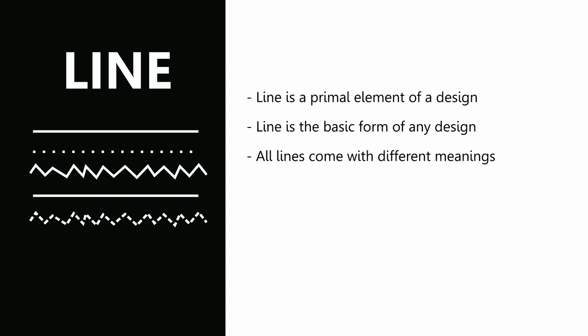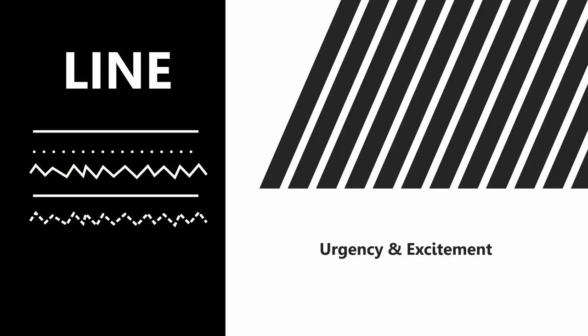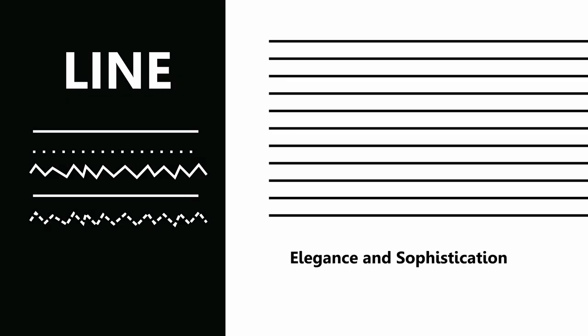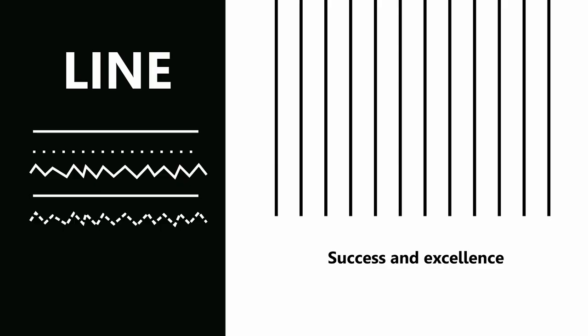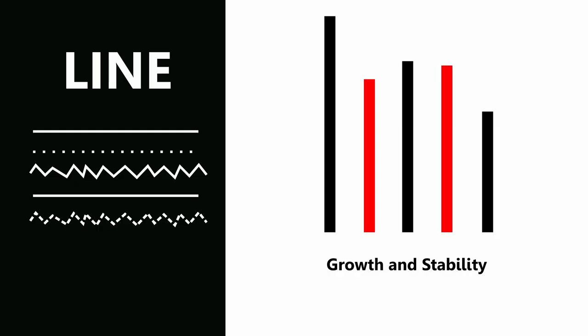All lines come with different meanings. What comes to your mind when viewing a strong diagonal line? It is not a sense of calmness but a sense of urgency and excitement. Diagonal lines can be used to convey motion or strength. Thin horizontal lines convey a sense of elegance and sophistication. Thin vertical lines convey a sense of elegance, success, excellence, growth, and stability. Using specific colors can also change the meaning of your line.